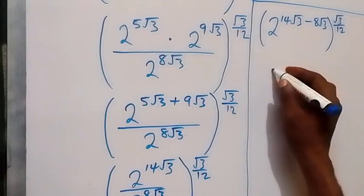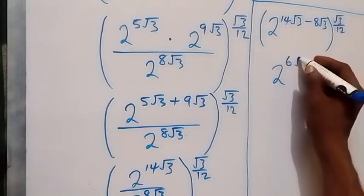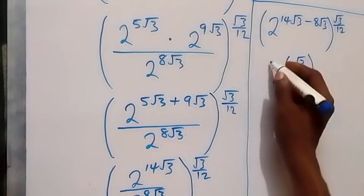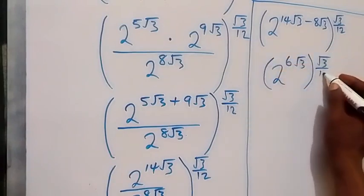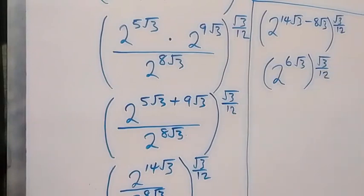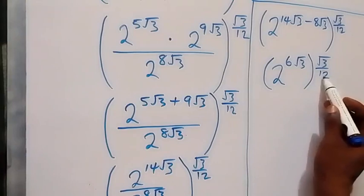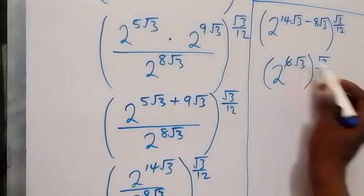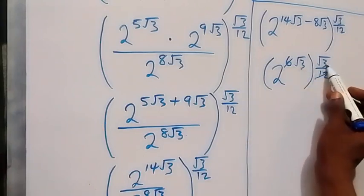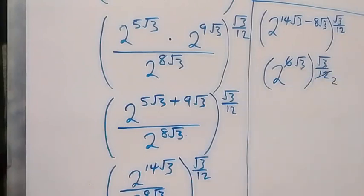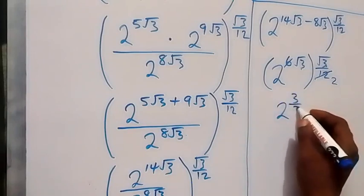From here, 14 root 3 minus 8 root 3 gives 6 root 3. So we have 2 raised to power 6 root 3, raised to power root 3 over 12. From the law of indices, this power multiplies: 6 times root 3 times root 3 over 12. Root 3 times root 3 is 3, so we have 2 raised to power 6×3 over 12, which is 2 raised to power 18 over 12, simplifying to 2 raised to power 3 over 2.